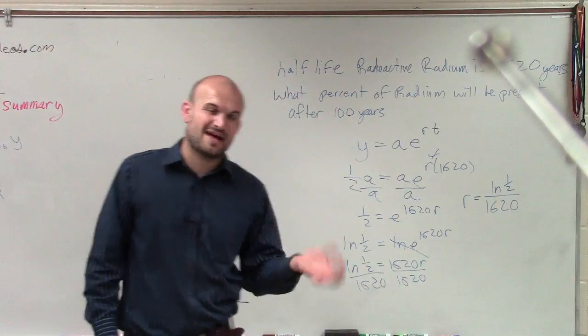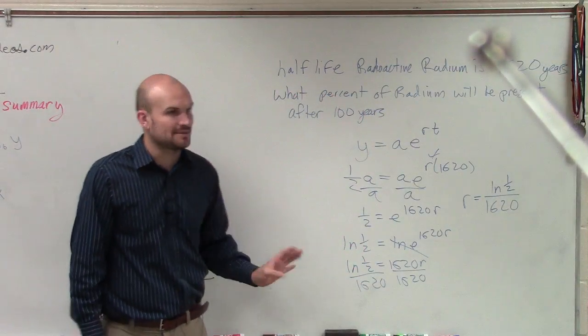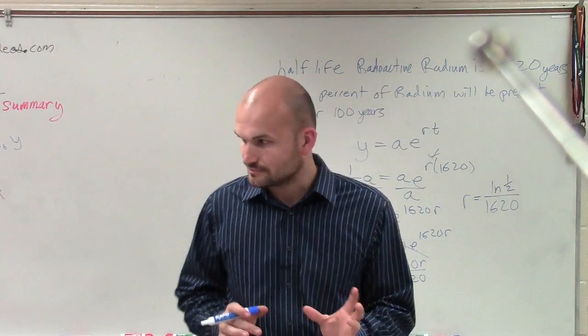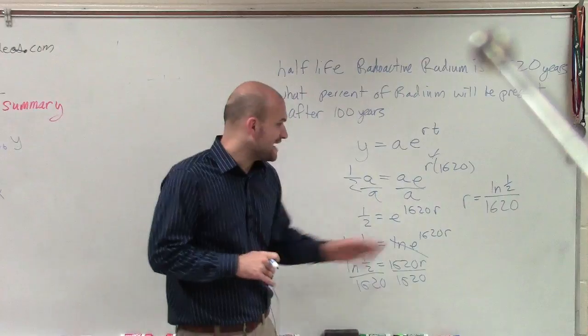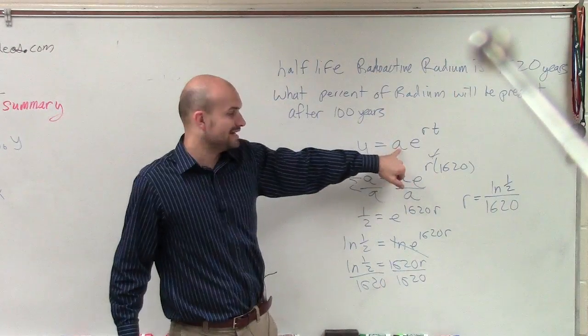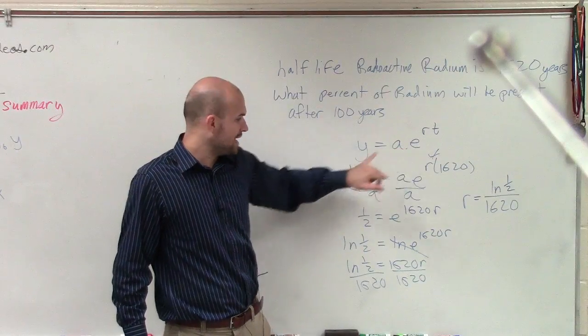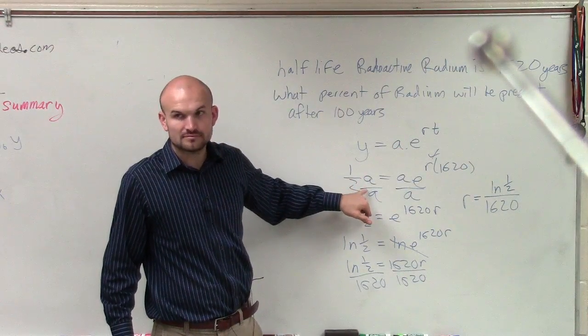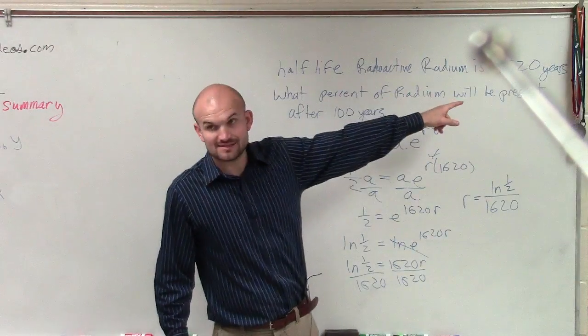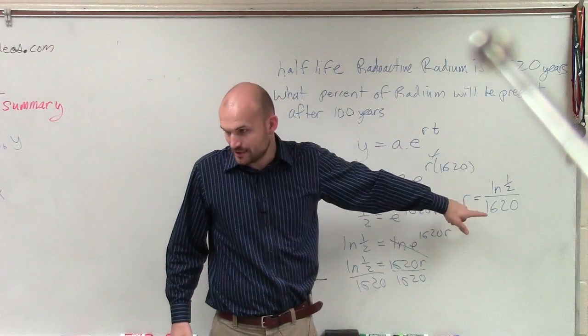I'm not going to evaluate what the r is yet. I'm going to leave that as a number because I don't want to approximate. But that is the rate that this radium decreases. Over 1,620 years, your initial value is now going to be half. So for an initial value to go to half for 1,620 years, your rate is going to be equal to this.